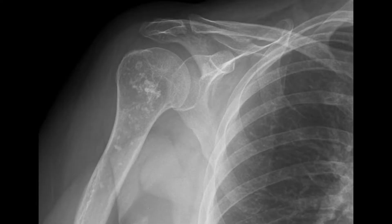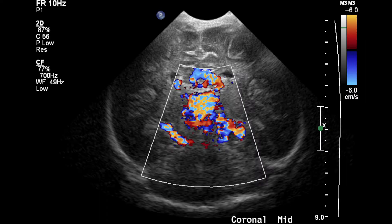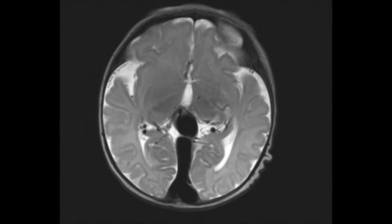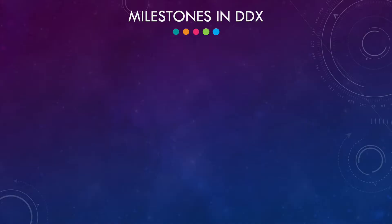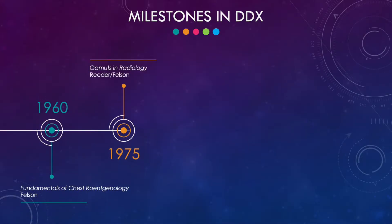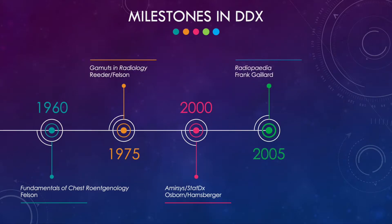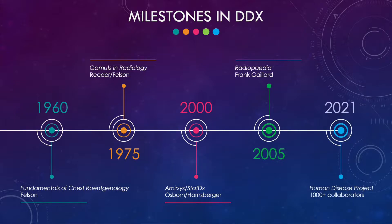Our role as radiologists is defined by our ability to form differential diagnoses. At key moments in imaging history, radiologists have come together to revise the written record on diseases with similar imaging manifestations, and the Human Disease Project is the first such revision in nearly 20 years.